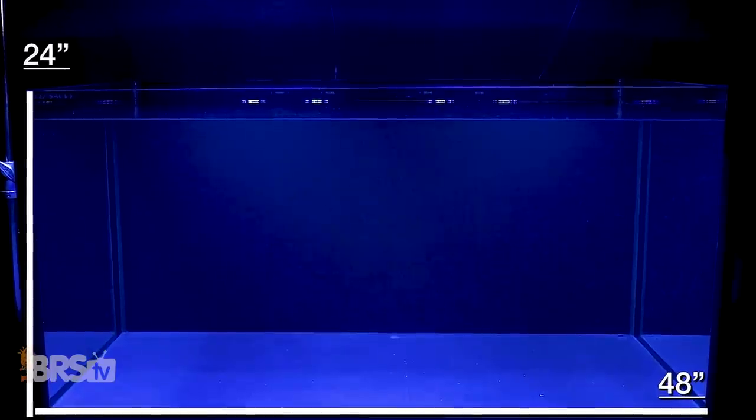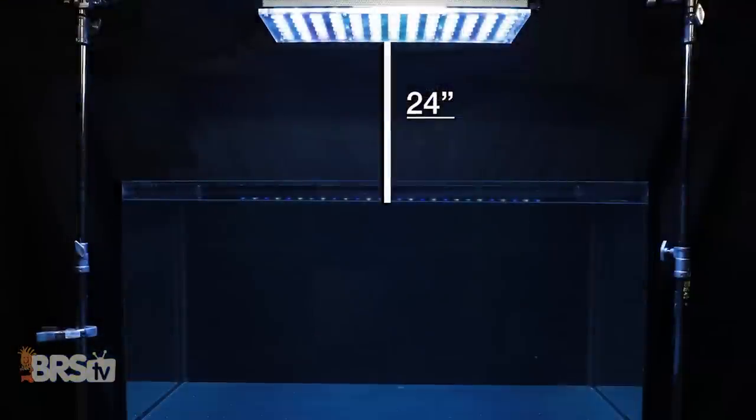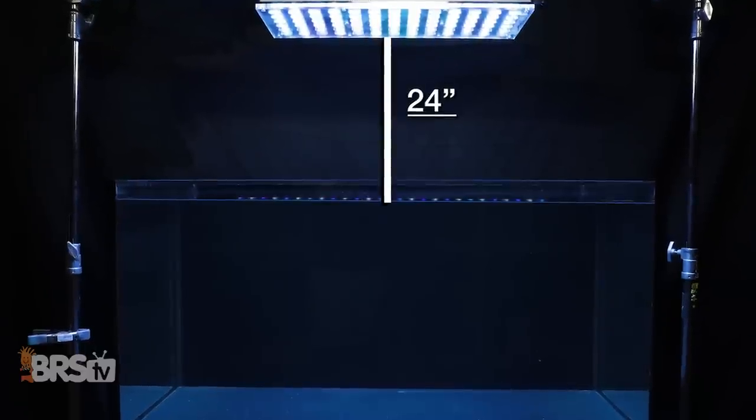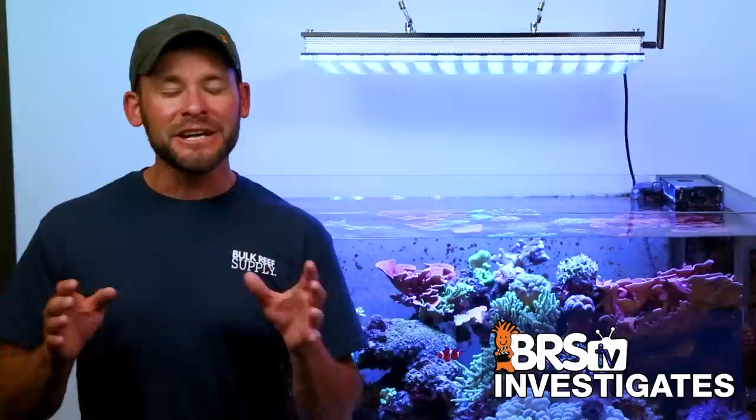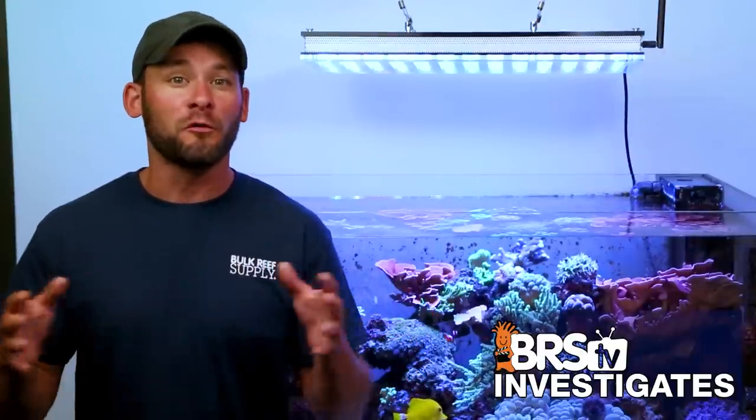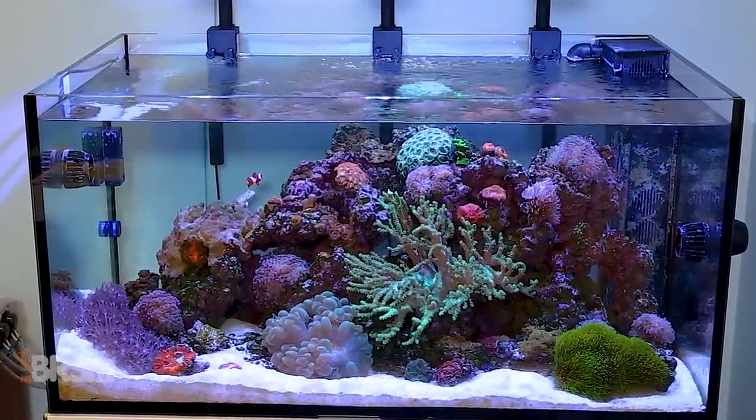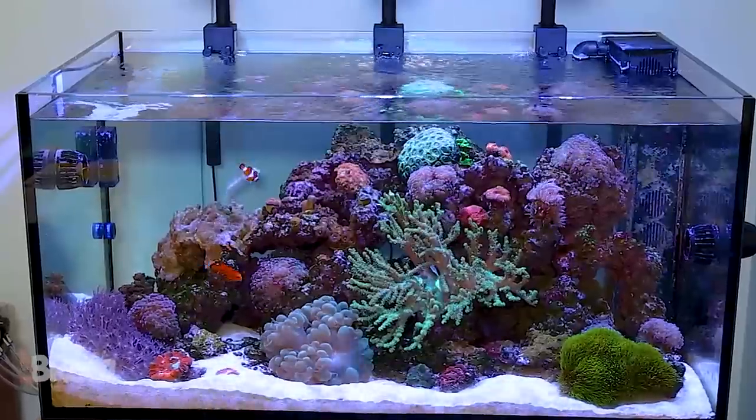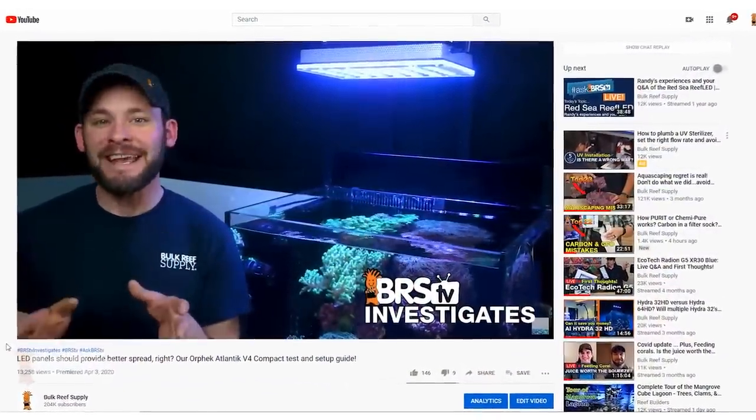As for lighting a tank area that is double the length of 48 inches by 24 inches, as much as we'd hope to see a single 24 inch Orphic get the job done for our LPS and softie tank goals, even at a super high mounting height of 24 inches off the water, it just doesn't produce the spread that we aim for to cover a full four foot tank from edge to edge. In which case, if you were set on using Orphics to light a similar 48 inch area for corals with lower PAR demands, I would recommend checking out our tests for two Atlantic V4 compacts instead.